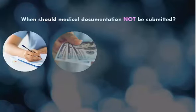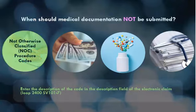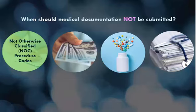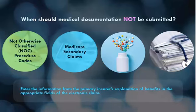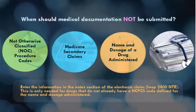When should medical documentation not be submitted? Not otherwise classified (NOC) procedure codes — enter the description of the code in the description field of the electronic claim, Loop 2400 SB 101-7. Medicare Secondary Claims — enter the information from the primary insurer's explanation of benefits in the appropriate fields of the electronic claim. Name and dosage of a drug administered — enter the information in the notes section of the electronic claim, Loop 2400 NTE. This is only needed for drugs that do not already have a HCPCS code defined for the name and dosage administered.